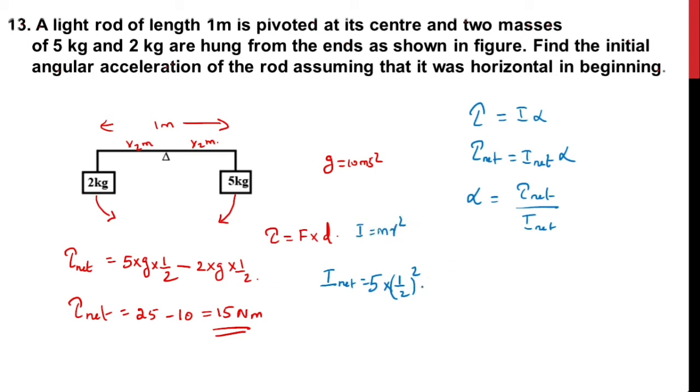Now I_net equals 5 times (1/2)² plus 2 times (1/2)². If you calculate this, you will get 7/4 kg·m², and that is the net moment of inertia.